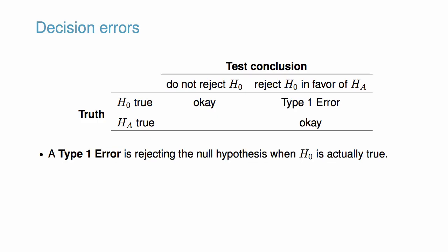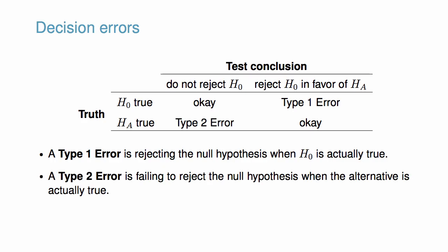A Type 1 error is rejecting the null hypothesis when the null hypothesis is actually true. A Type 2 error is failing to reject the null hypothesis when the alternative is actually true.